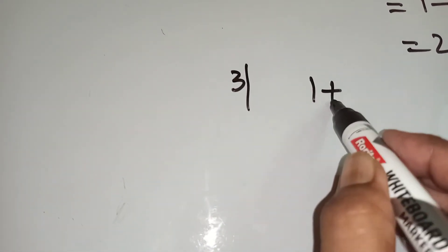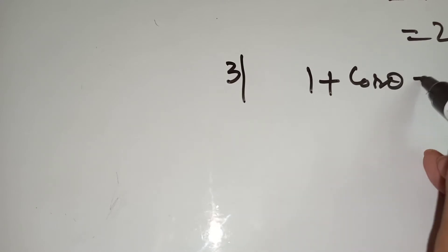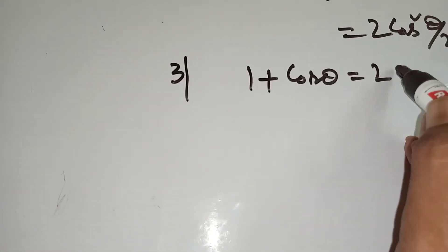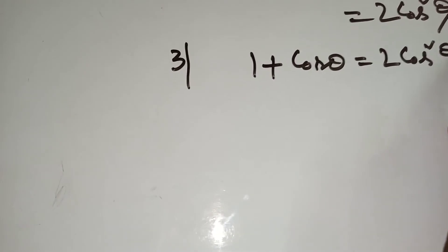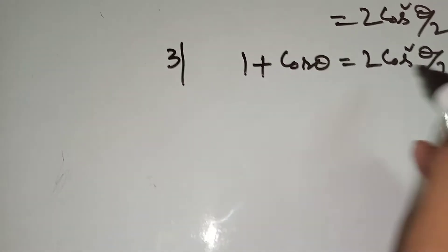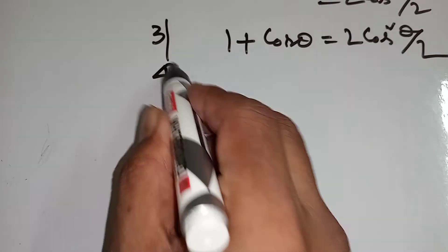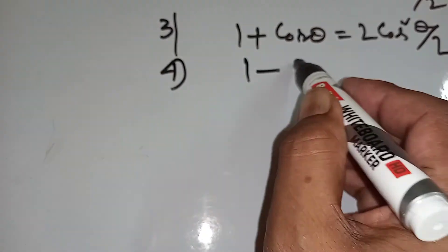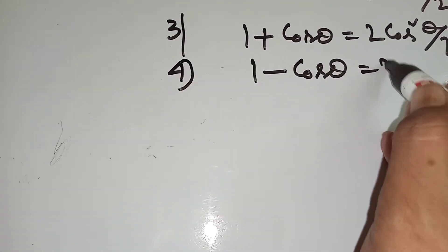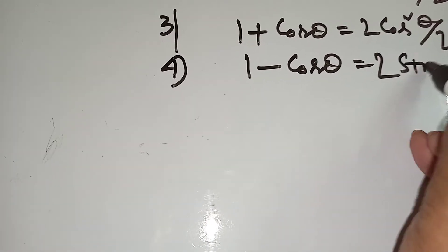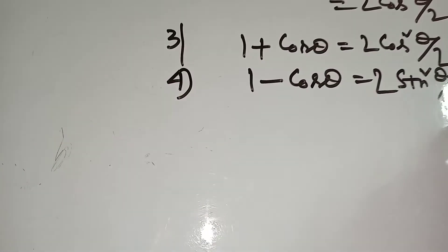1 plus cos theta equal to 2 cos square theta by 2. 1 minus cos theta equal to 2 sin square theta by 2.